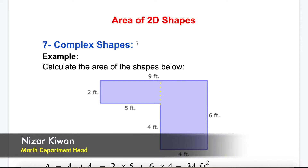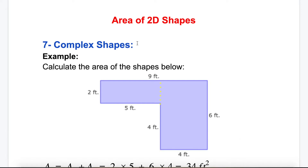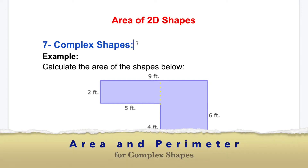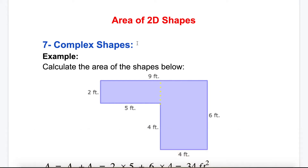Now I will move to area and perimeter for complex shapes. Complex shapes are more than one shape together — they might be inside each other or next to each other. If they are next to each other, you add them for the area. If they are inside each other, you subtract them.